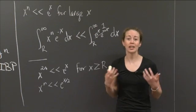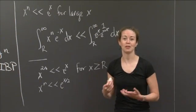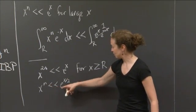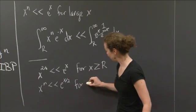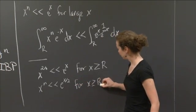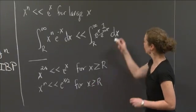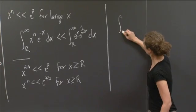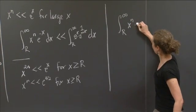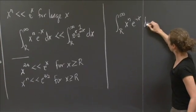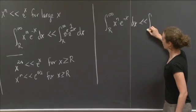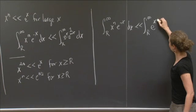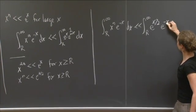As you're working on this type of problem, this is the thought process you want to go through. We have x to the n is much less than e to the x over 2 for x greater than or equal to R. Now let's do a comparison with our new comparison function. We're integrating from R to infinity of x to the n times e to the minus x dx, and we know that's going to be much less than the integral from R to infinity of e to the x over 2 times e to the minus x dx.